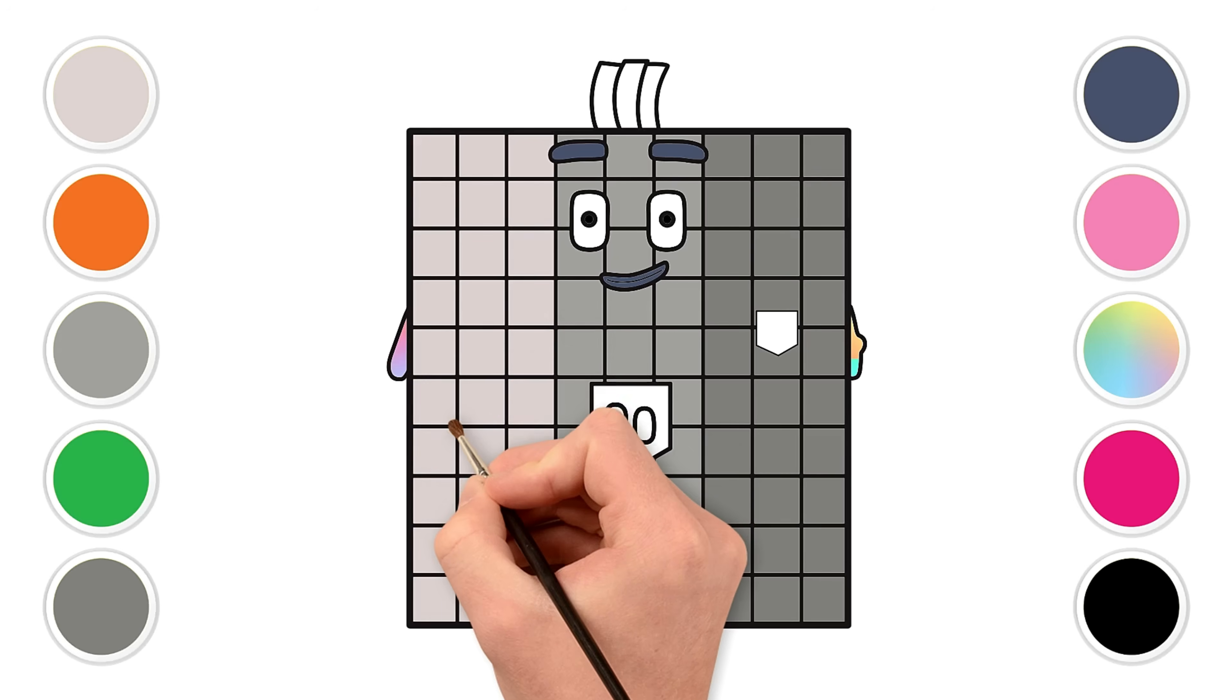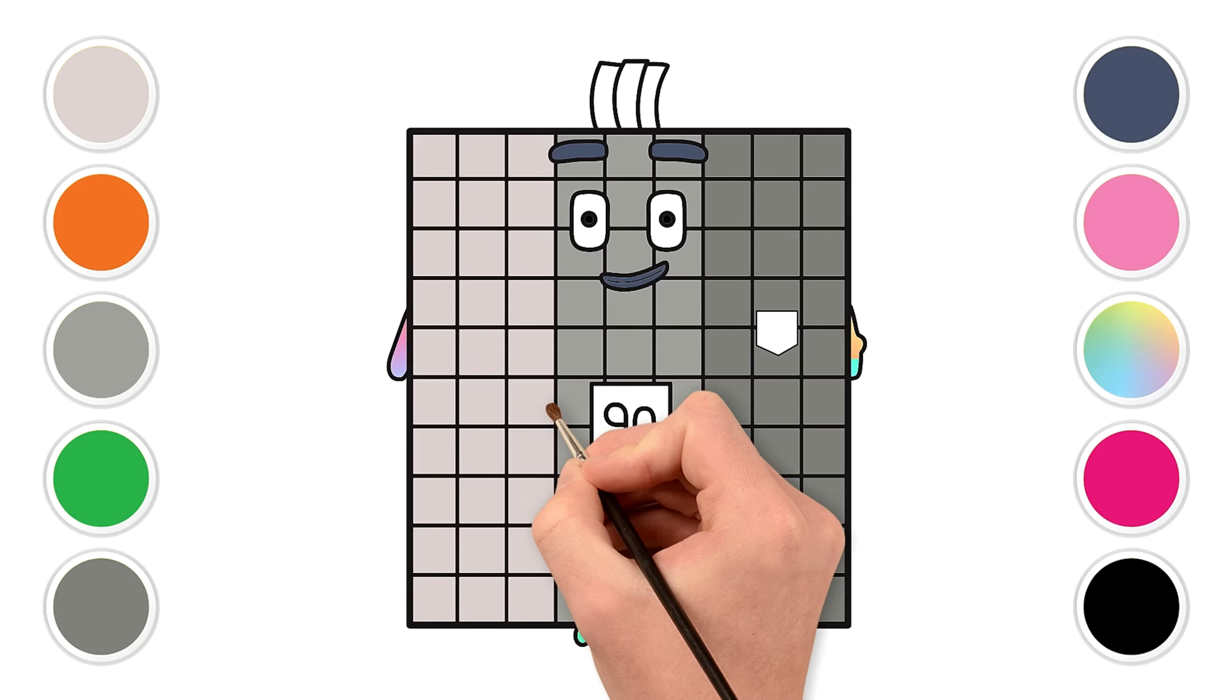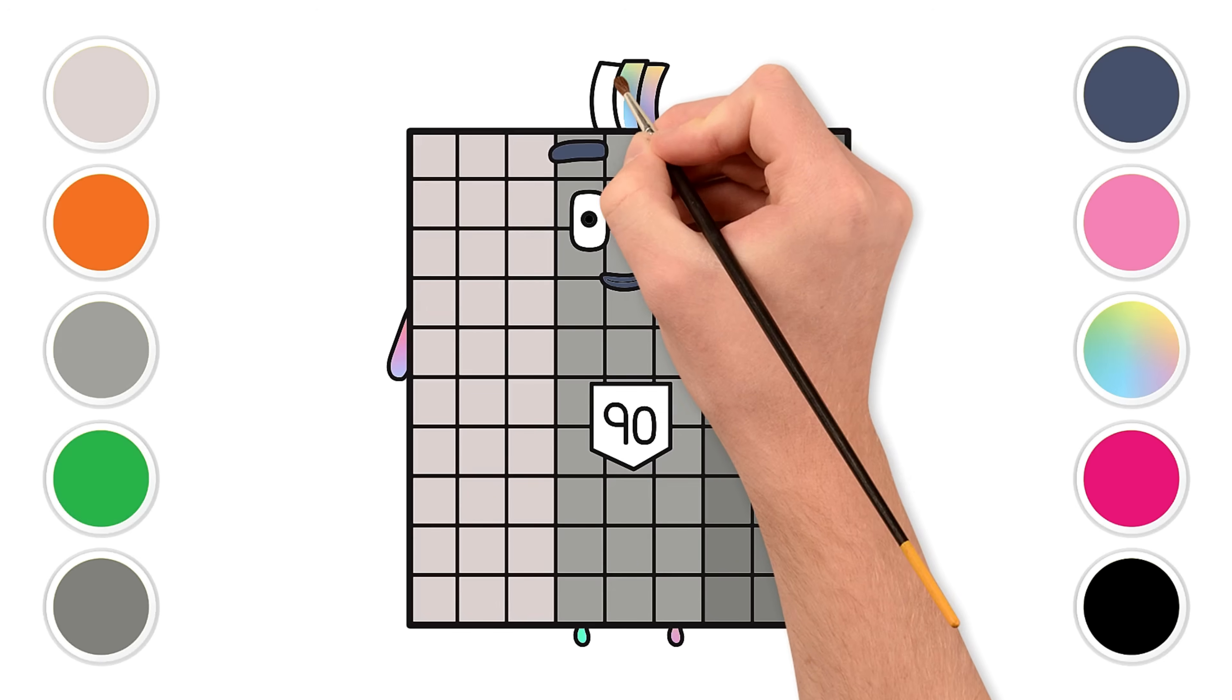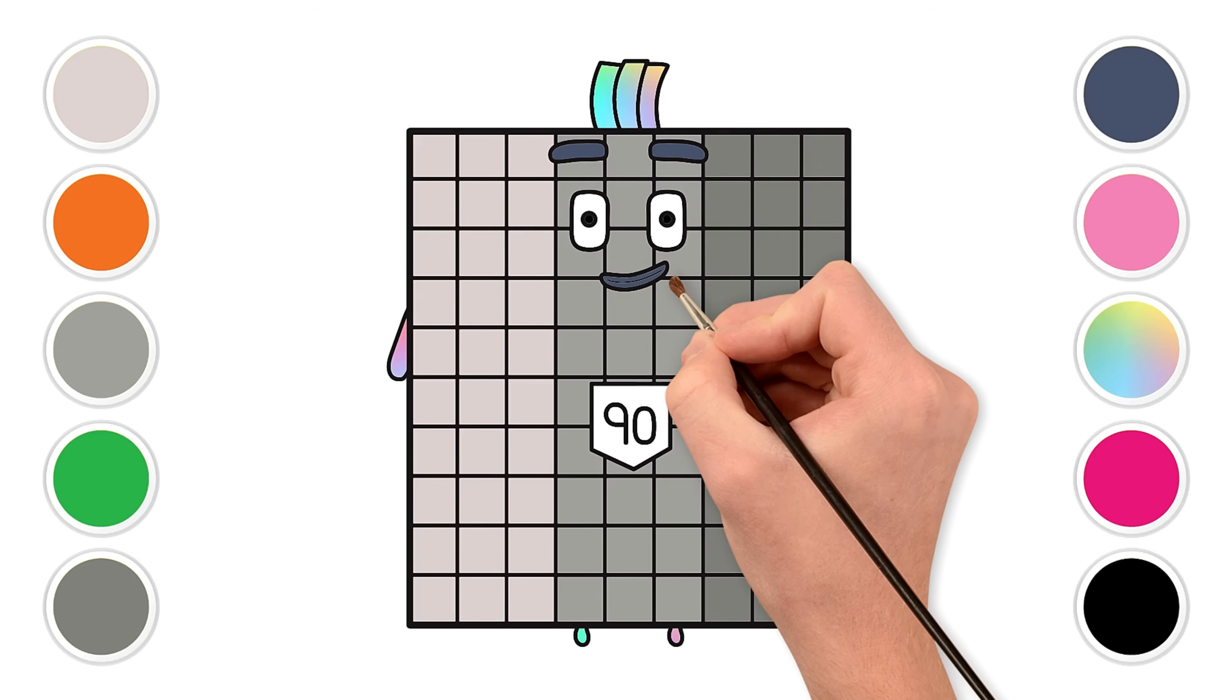Let's color his hair using the same pastel rainbow color. Each stripe on his hair can be a different color. So pretty and colorful. And finally, color the small pocket on his side with your rainbow colors too. It shines just like his hair and badge.